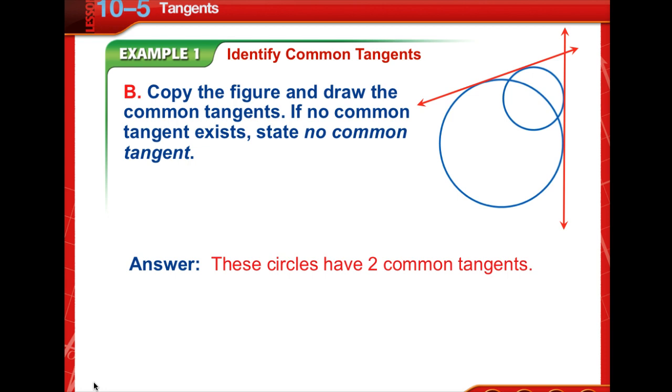Well if you draw lines, you see that there is a line that touches each circle in exactly one point here and here. So these circles have two common tangents.